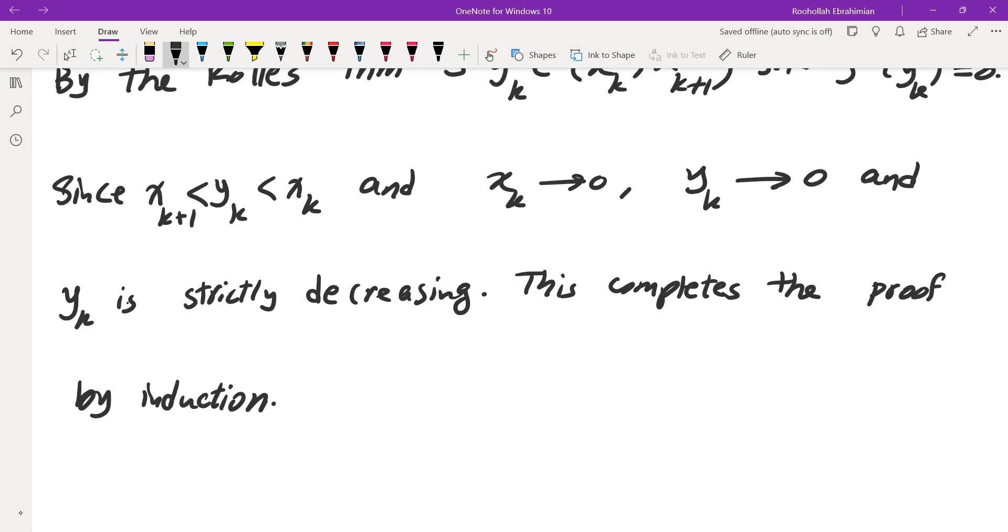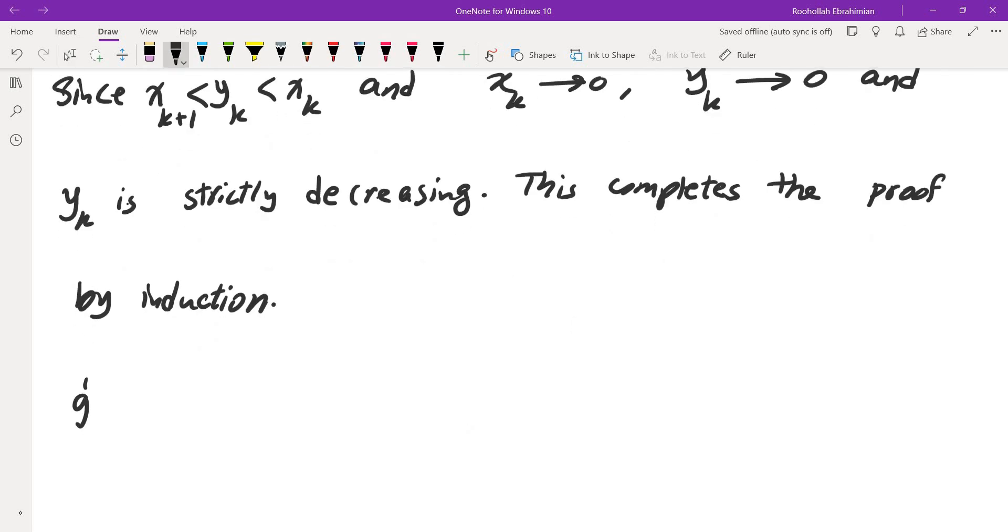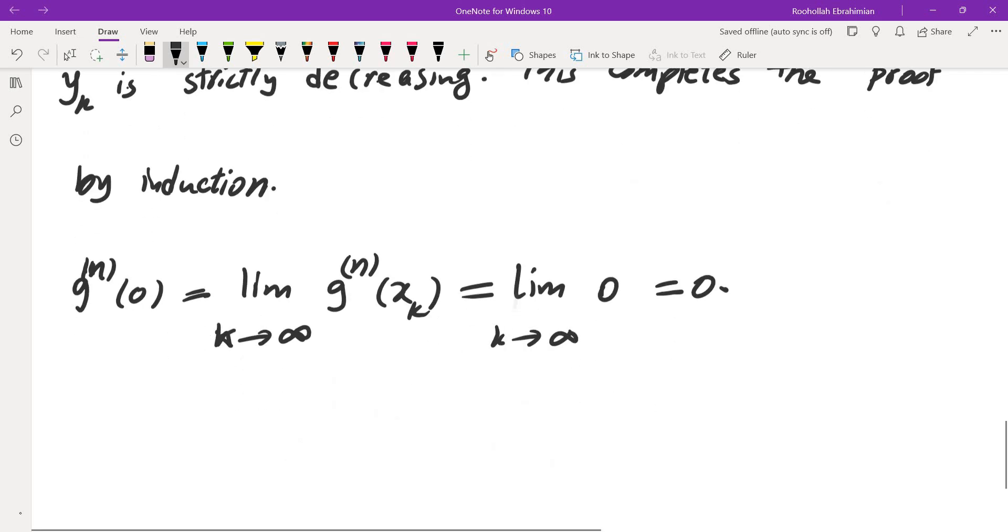Now we are going to apply the continuity of gn. Now gn of 0 is going to be the limit as k approaches infinity of gn of xk. Gn of xk is 0. So this is the limit as k approaches infinity of 0, which is 0. So therefore, for every natural number gn of 0 is equal to 0.